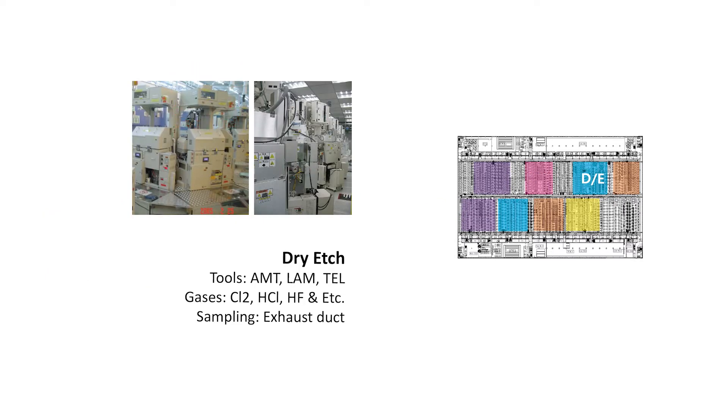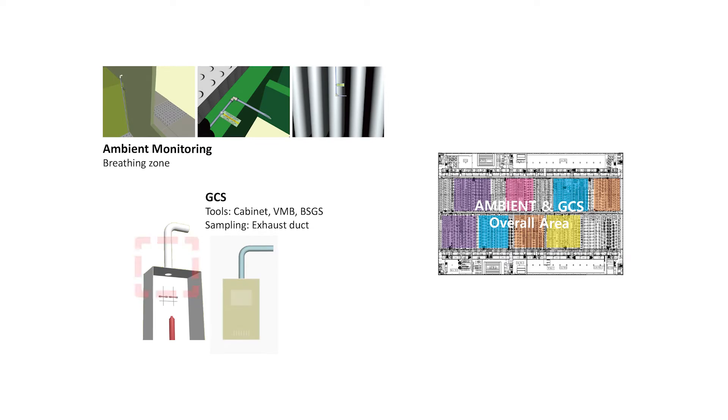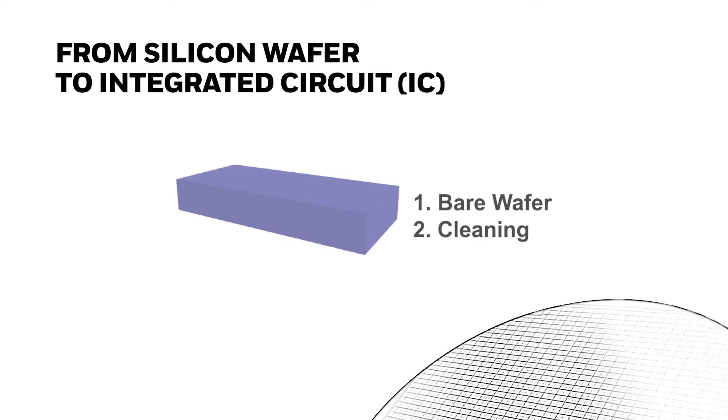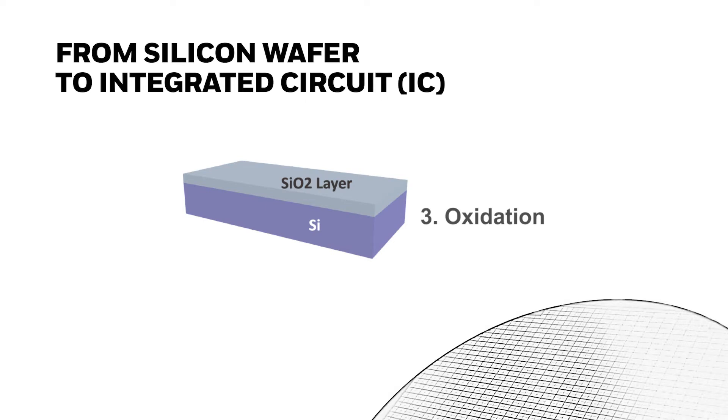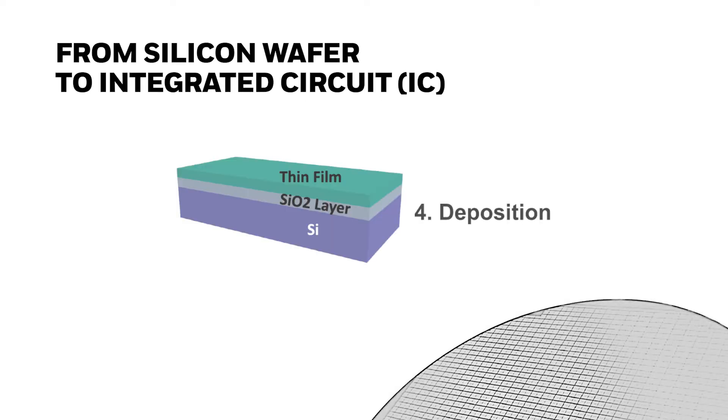Second, very tiny gas molecules can etch ultrafine wire patterns during etching. Third, arsine, phosphine, and boron trifluoride molecules dope ionic property into material while ion implantation.